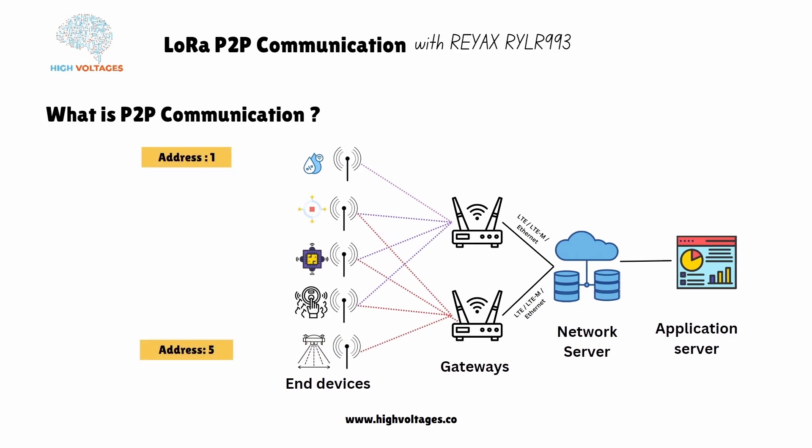P2P communication is when the connection occurs directly between end node devices, instead of between an end node and a gateway. For example, the communication between the first device and fifth device in this figure is peer-to-peer.